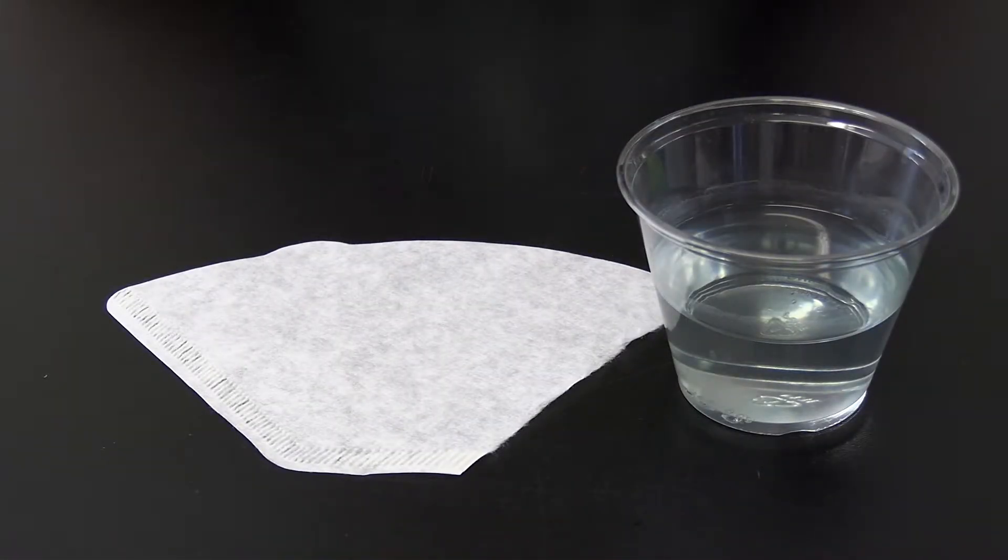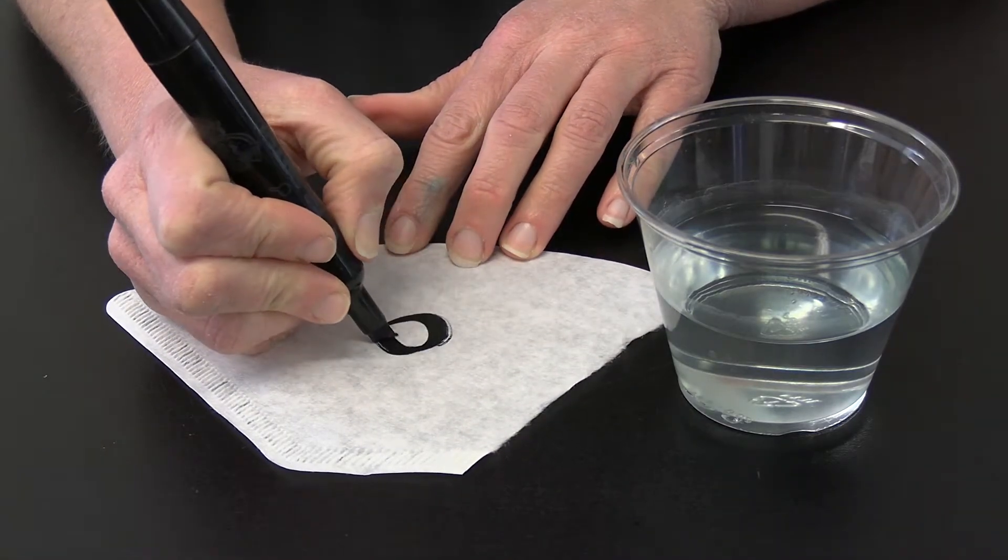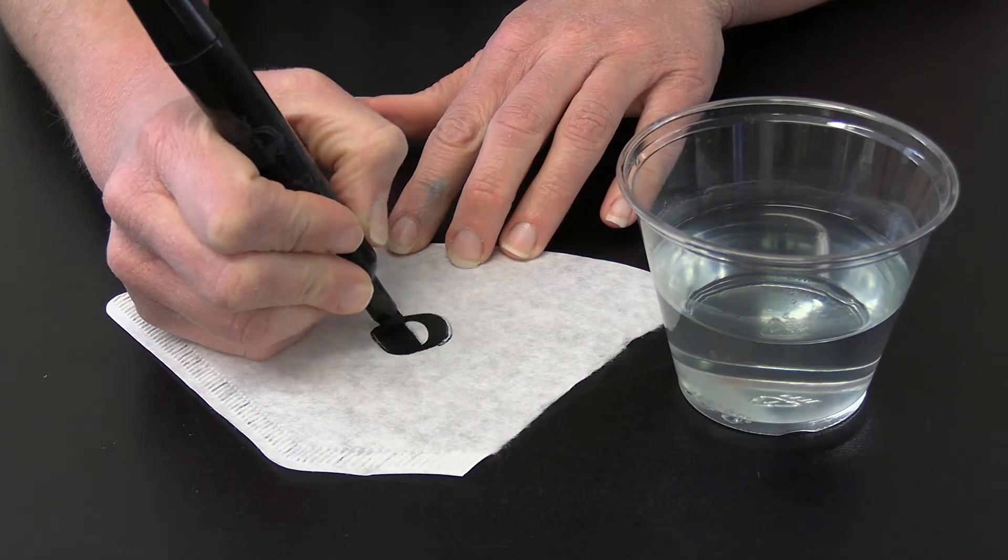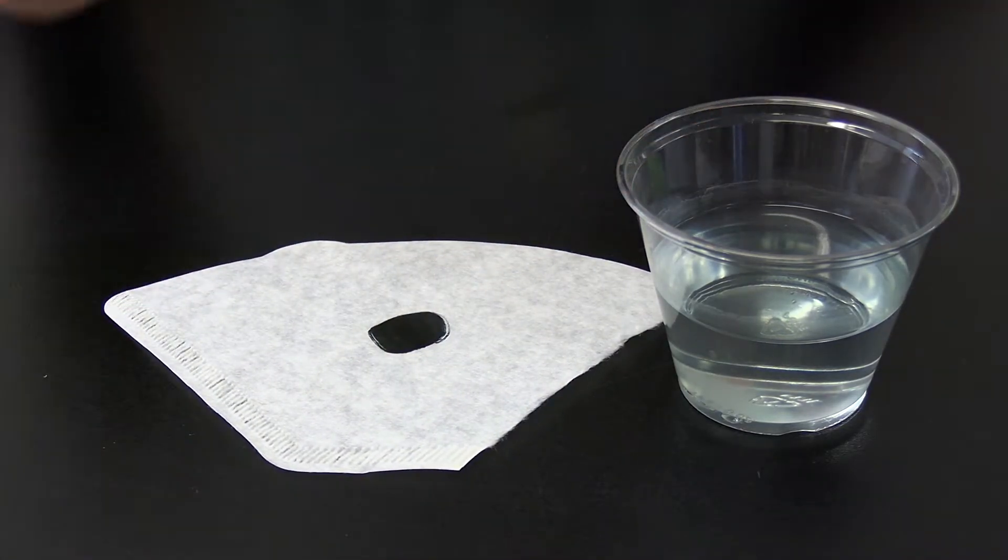Alright, let's get started. Begin by coloring a circle in the center of the filter paper about the size of a dime. Don't press too hard. The paper is delicate. If you do, it might tear.